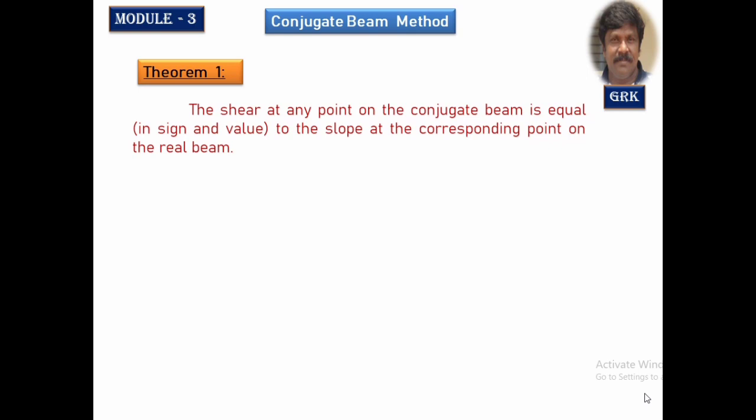These theorems are almost the same as those in the moment area method; only the wording is different. The first theorem is about finding out the slope at any point of the real beam. The shear force in the conjugate beam at that point gives the slope of the real beam. The load acting on the conjugate beam is the M/EI diagram. I am stressing this again so there is no confusion, and you can clearly understand the concept by looking at the problems.